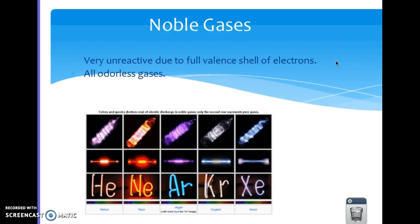Your noble gases is family 18, and the reason they're called noble gases is because their valence electrons are full, and they will not react with other elements on the periodic table, so they are found alone in nature. They are also all odorless gases of varying colors.